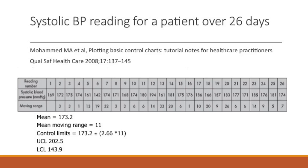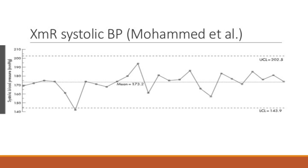The mean of the blood pressure readings is 173.2 and the mean moving range is 11. Using our correction factor of 2.66, we calculate the control limits: 173.2 plus 2.66 times 11 gives an upper control limit of 202.5, and 173.2 minus 2.66 times 11 gives a lower control limit of 143.9. Finally, we plot the numbers and this is what it looks like.